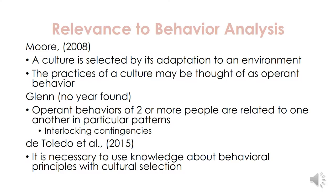Cultural selection is relevant to behavior analysis. Moore states that a culture is selected by its adaptation to an environment and that the practices of a culture may be thought of as operant behavior. Glenn discusses interlocking contingencies as the operant behaviors of two or more people that are related to one another in particular patterns. De Toledo et al. states that it is necessary to use knowledge about behavioral principles with cultural selection.